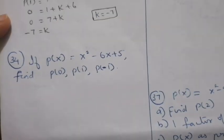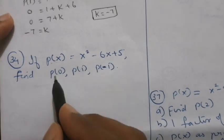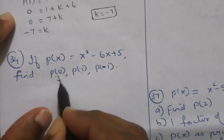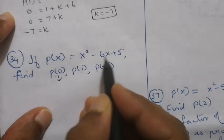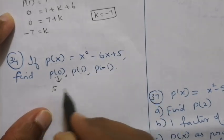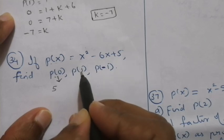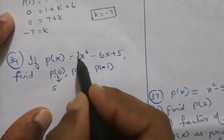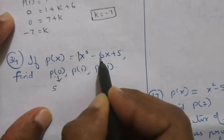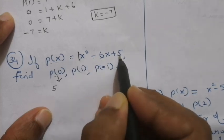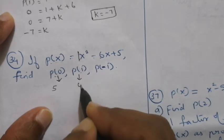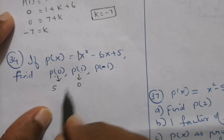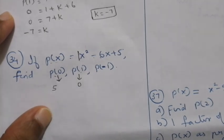Another question: given p of x, find p of 0, p of 1, and p of minus 1. For p of 0, the constant term is plus 5, so p of 0 equals 5. For p of 1, add all coefficients with their signs: 1 minus 6 minus 5 plus 5 equals 0. For p of minus 1, substitute x equals minus 1 and calculate.